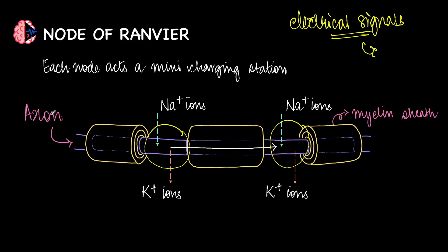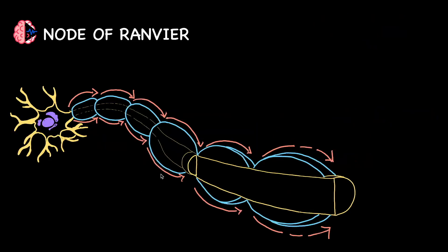As a result, when the impulse reaches the node of Ranvier, it does not go straight further. Rather it leaps to the next node. Which is why in this particular case, the signal travels jumping from one node to the next. And this type of conduction is called saltatory conduction.